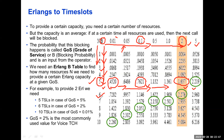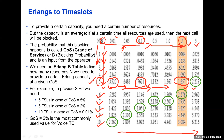Likewise, we can see six physical resources, seven physical resources, and so on — up to 9, 10 — and depending on the grade of service, or the allowed blocking in the network, the traffic handling capacity increases accordingly. Thank you all.